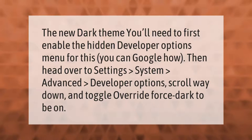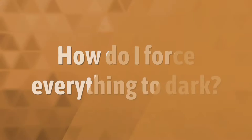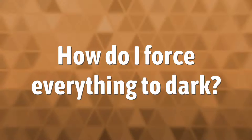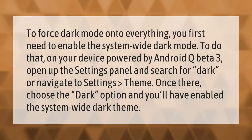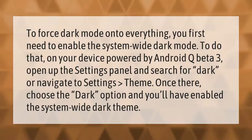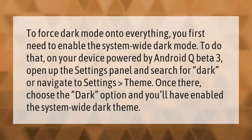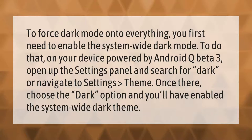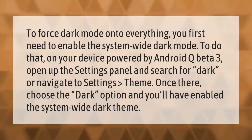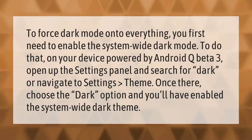To force dark mode onto everything, you first need to enable the system-wide dark mode. To do that on your device powered by Android Q beta 3, open up the Settings panel and search for 'dark', or navigate to Settings > Theme. Once there, choose the dark option and you'll have enabled the system-wide dark theme.